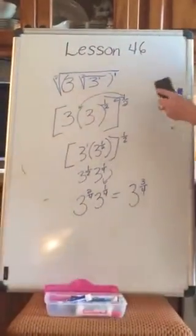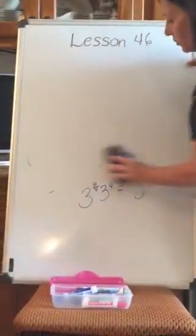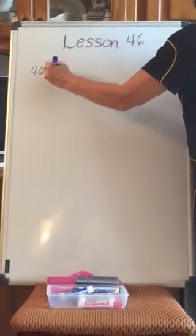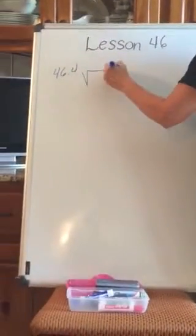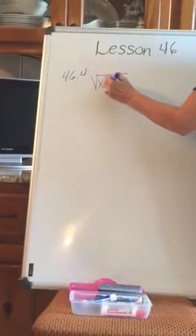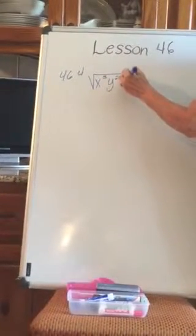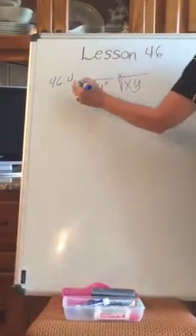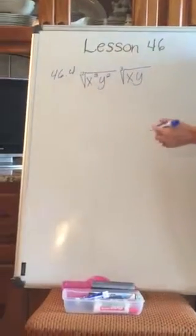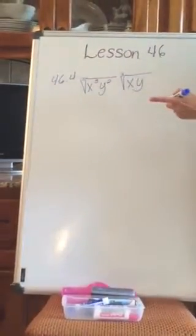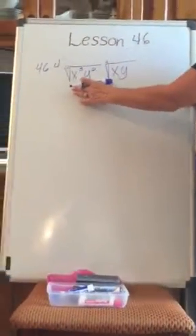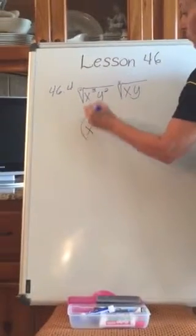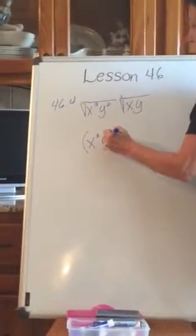Now look at 46.4, which is slightly more difficult — the previous one you should have been able to do on your calculator. In 46.4, we have x cubed, y squared under a square root, and the cube root of x times y. This is assumed to be 2 for the outer radical. The first thing I'm going to do is replace the radicals with fractional exponents. We'll leave x cubed, y squared alone, and it's raised to the 1 half.